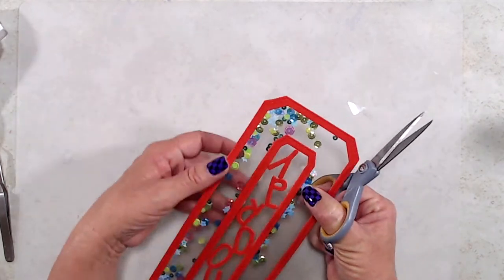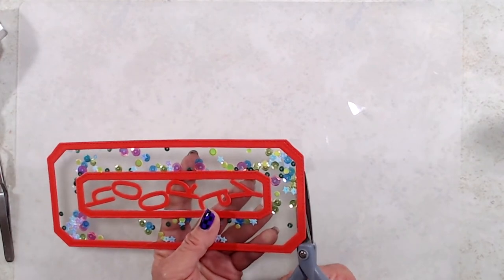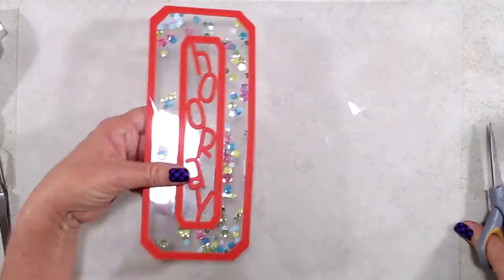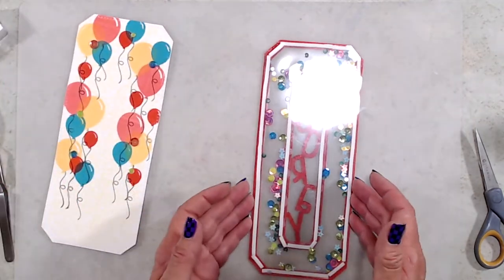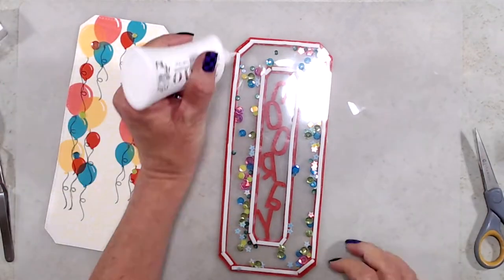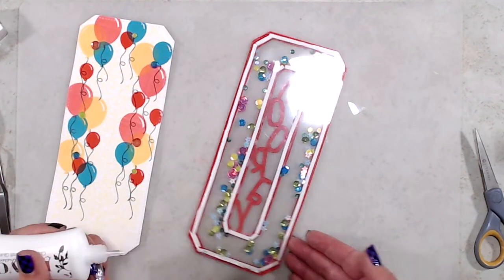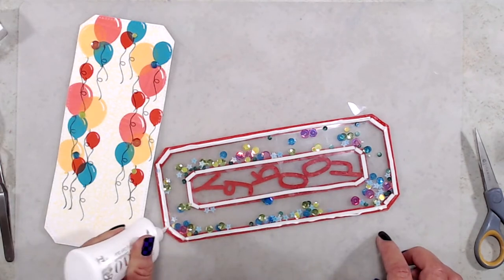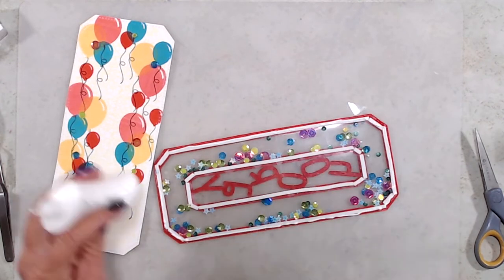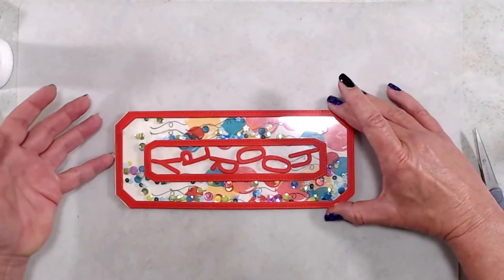I cut another piece of acetate to adhere to the back side of my shaker panel, and the reason I like to do that is because it makes it much easier to line up my front shaker panel onto my stamped panel. I used liquid glue to do that and I should have used score tape. Anyway, once I had my shaker panel adhered together, I adhered that to the front of my shaped note card.